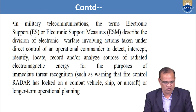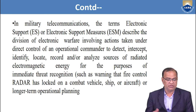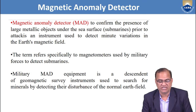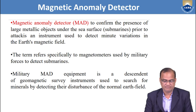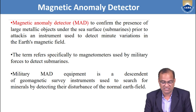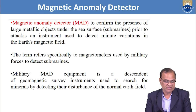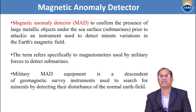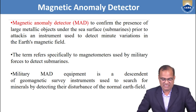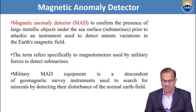Such threats include a warning that a fire control radar has locked on to a combat vehicle, ship, or aircraft, or for longer-term operational planning. The Magnetic Anomaly Detector — also called MAD — is used in military aircraft to confirm the presence of large metallic objects under the sea surface, such as submarines, prior to attack. It is an instrument used to detect minute variations in the Earth's magnetic field. MAD equipment is a descendant of the geophysical survey instrument used to search for minerals by detecting disturbances of the normal Earth field.